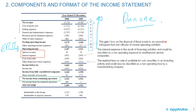What would be an example of other operating income or expense? It could be the gain or loss on the disposal of a fixed asset, which is unusual or infrequent. It may be infrequent, but it's still part of normal operating activities.